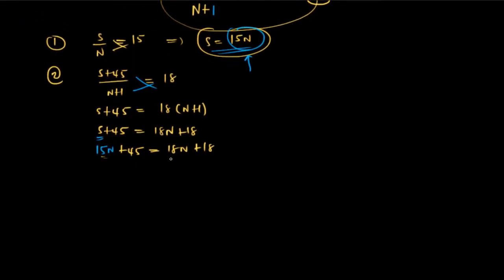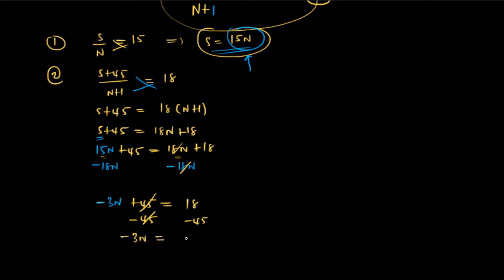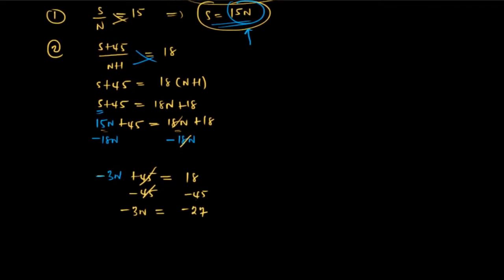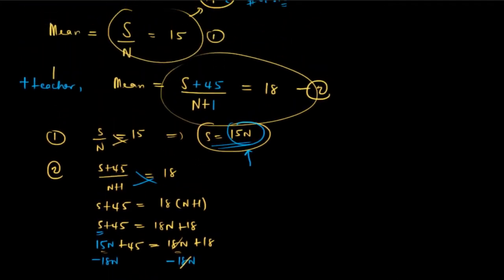Our aim is to find n. Subtracting 18n from both sides gives negative 3n plus 45 equals 18. Subtracting 45 from both sides gives negative 3n equals 18 minus 45, which is negative 27. Dividing both sides by negative 3, the negatives cancel and 3 divides into 27, giving n equals 9. So the total number of students is 9.